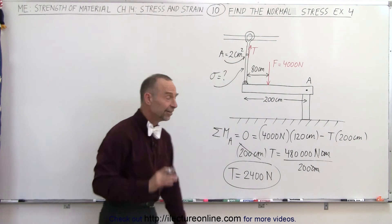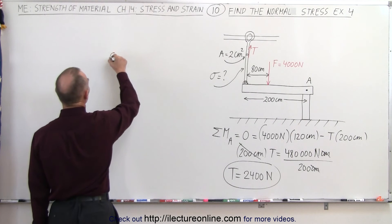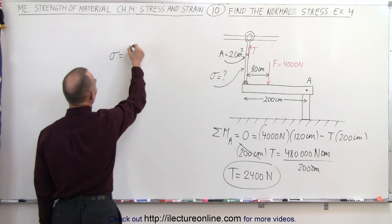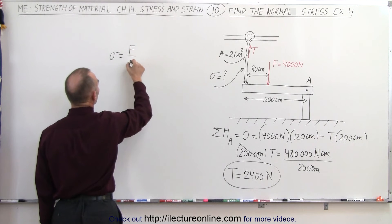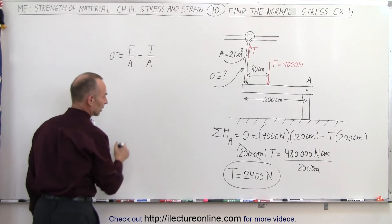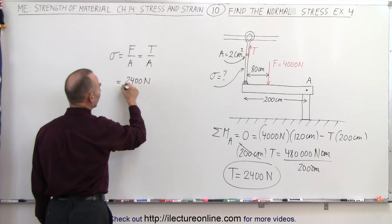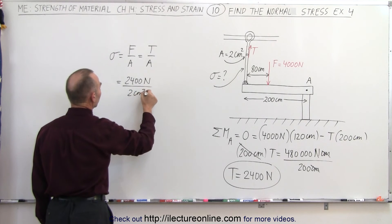All right, so now we have the tension inside the cable, now we can find the stress inside the cable because the stress is defined by definition as the force divided by area, which in this case will be the tension in the cable divided by the cross-sectional area. So this will be equal to 2,400 newtons divided by a cross-sectional area of two centimeters squared.